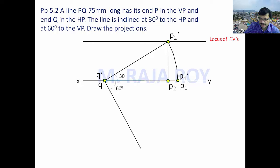Take the inclination with respect to VP that is 60 degrees. Draw a 60 degree line. Then take Q' as center, Q' P1' as radius. Draw an arc. This is P3. This is locus of top views.